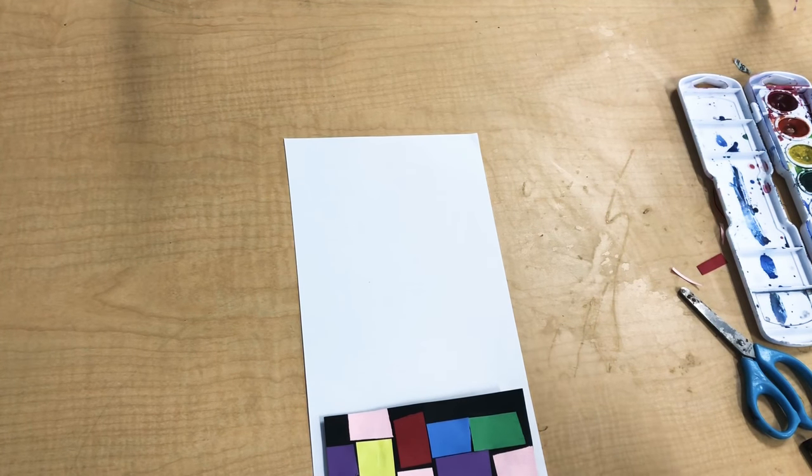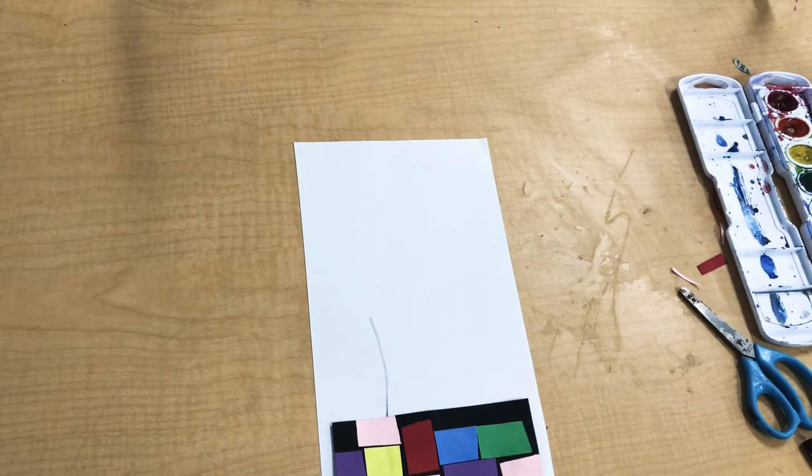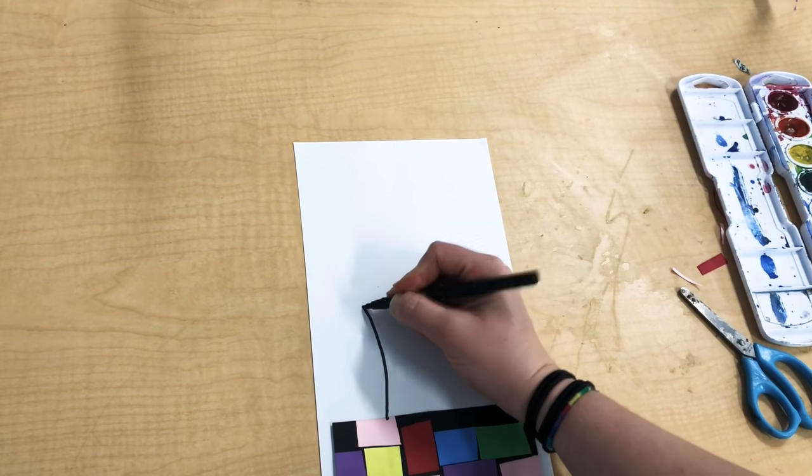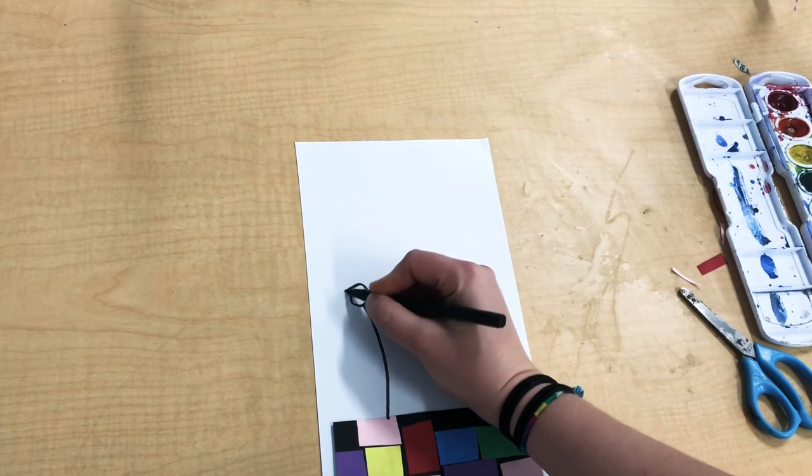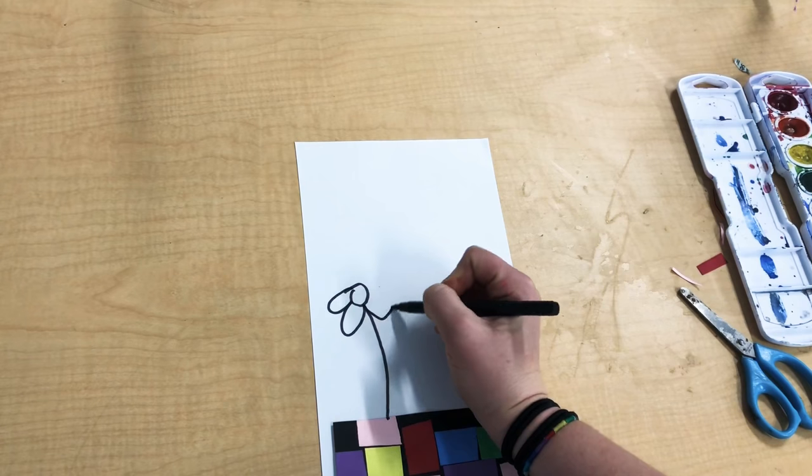So you're going to make your flowers, you're going to start by drawing a line. Then make sure you've got a marker that works. So you're going to draw a line, then put a circle at the top, then add some petals.